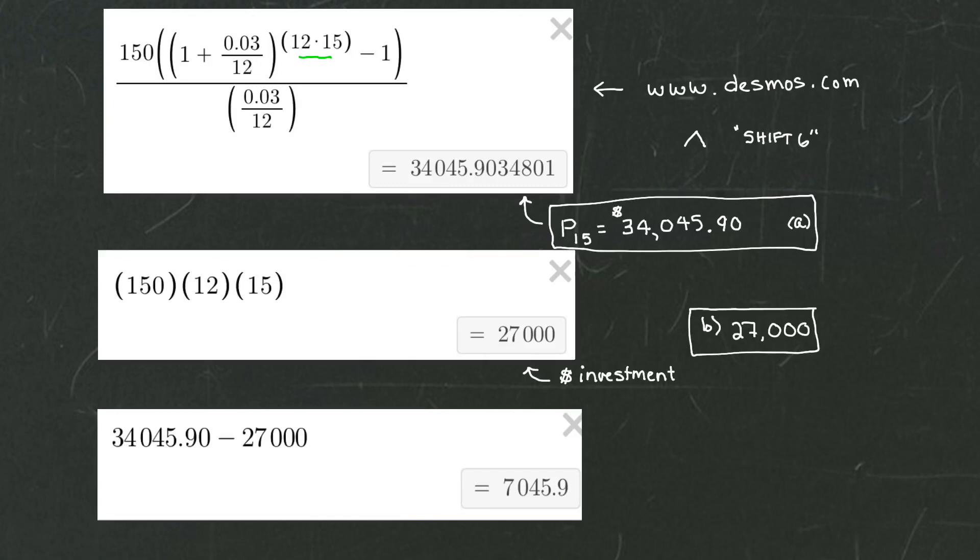We take $34,045.90, which from part A we discovered was the amount in our account after 15 years. We subtract from it $27,000, which if you recall from part B was the amount that we invested by making our monthly payments. And when we subtract, we get the difference of $7,045.90. That is the answer for part C. That's the amount of interest that we have earned over the 15 years. I hope this helps you to understand annuities a little better.